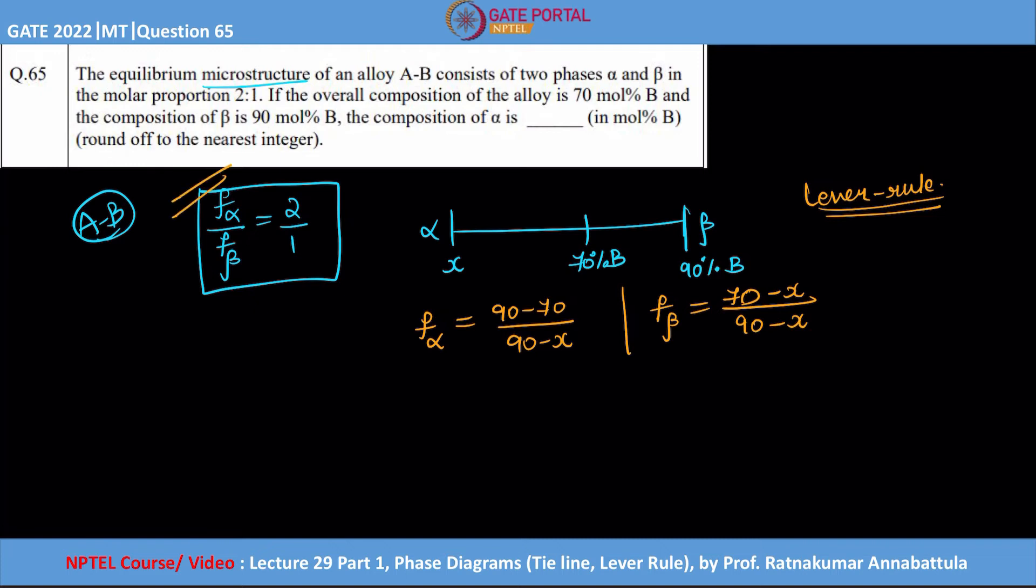Now from this given relation you just implement that. F_alpha by F_beta is equal to 2, which is equal to 20 divided by 70 minus x, because the denominators are the same and will get cancelled.